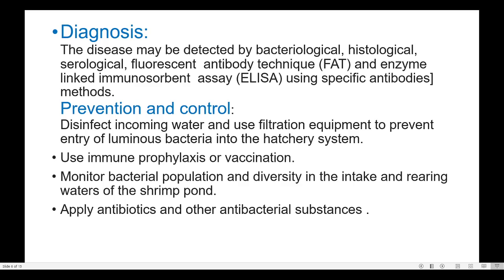Prevention and Control: Disinfect incoming water and use filtration equipment to prevent entry of luminous bacteria into the hatchery system. Use immunoprophylaxis or vaccination. Monitor bacterial population and diversity in the intake and rearing waters of the shrimp pond.